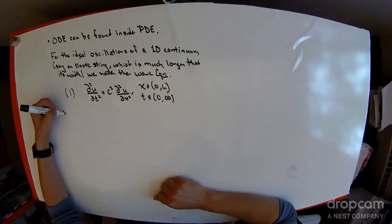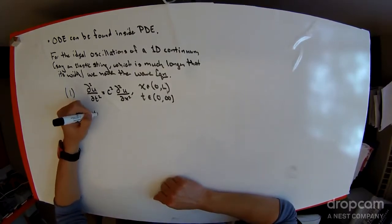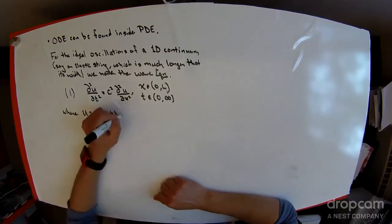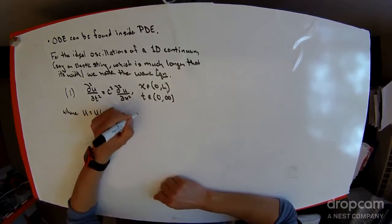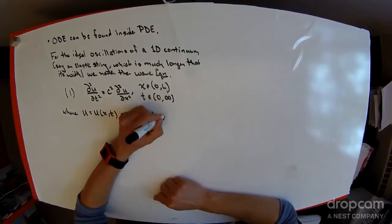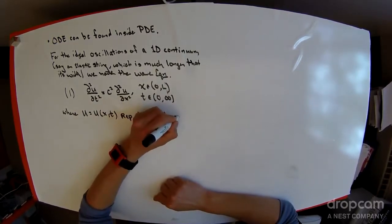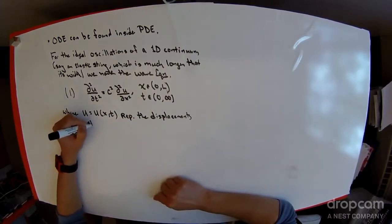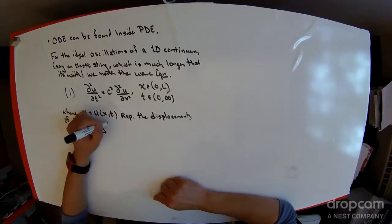What's important to remember is that u, the unknown function, is a function of both space and time, and it represents the displacements of the string from rest.